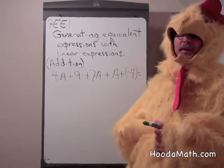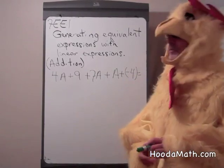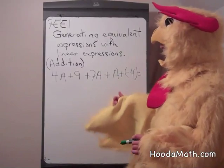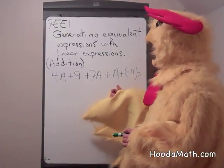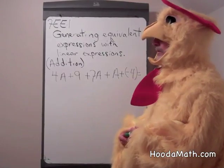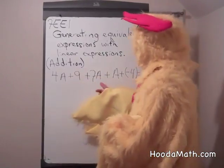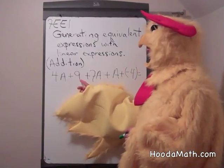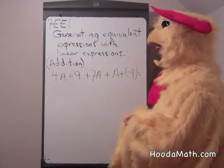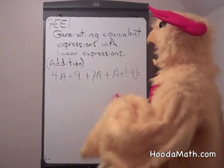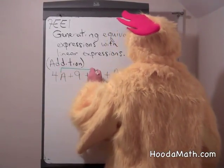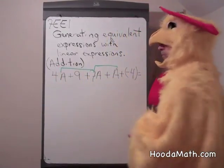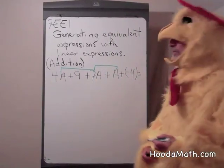What we do is we combine like terms. Meaning we can only add or subtract terms which have variables in them or only numbers. So I'm going to show you how. We can combine 4a plus 7a plus a. We will associate those numbers.